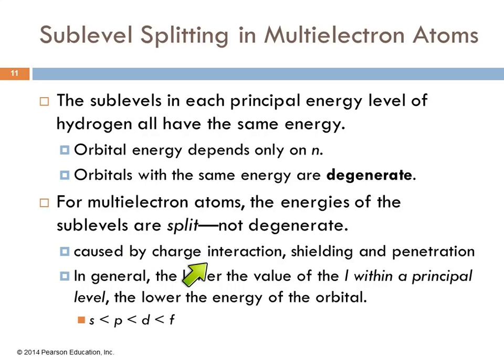There's charge interactions, shielding of the outer electrons from the nucleus by the inner electrons, and penetration. There's all kinds of factors. But generally, the lower the value of L within a principal level, the lower the energy of the orbital. So if you're talking about, say, N equals four, S will be lower than P, lower than D, and F will have the highest energy. That will hold true in a given principal energy level.